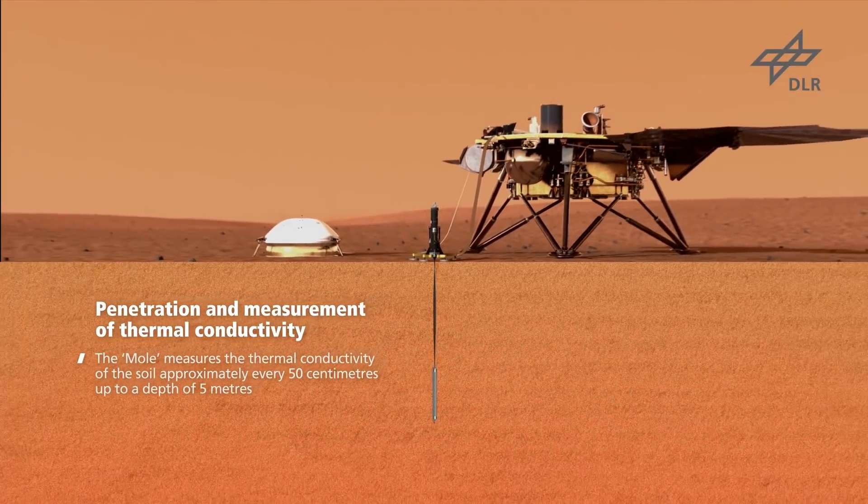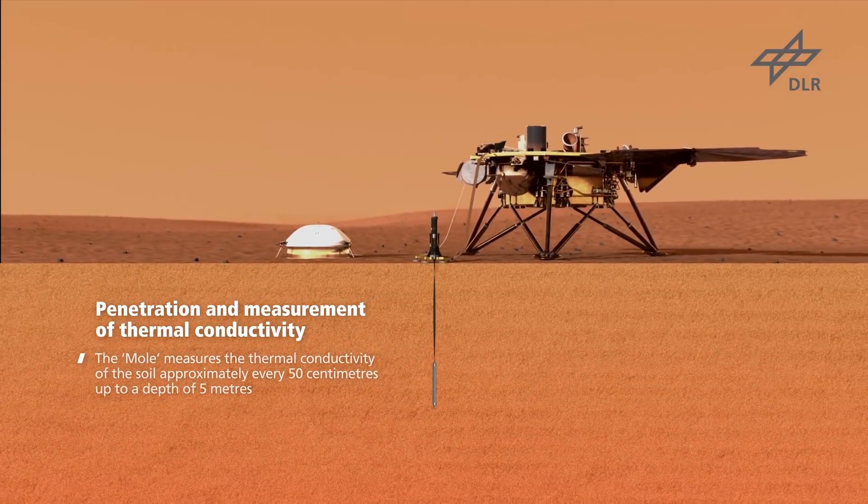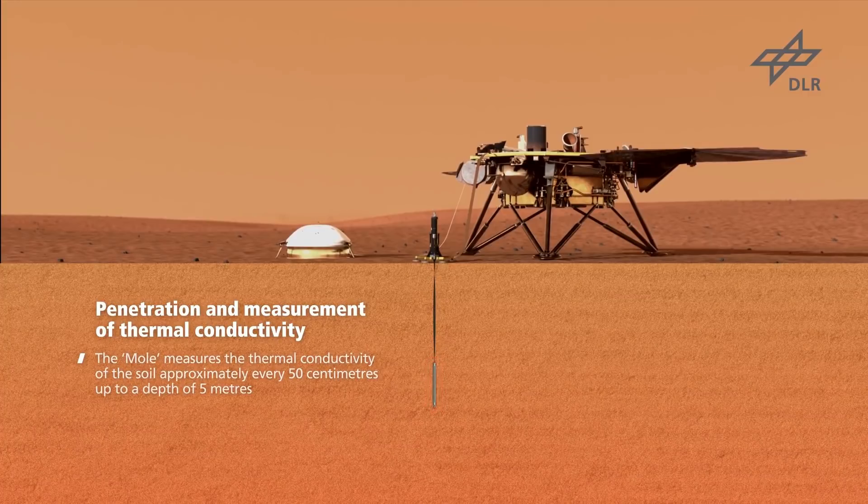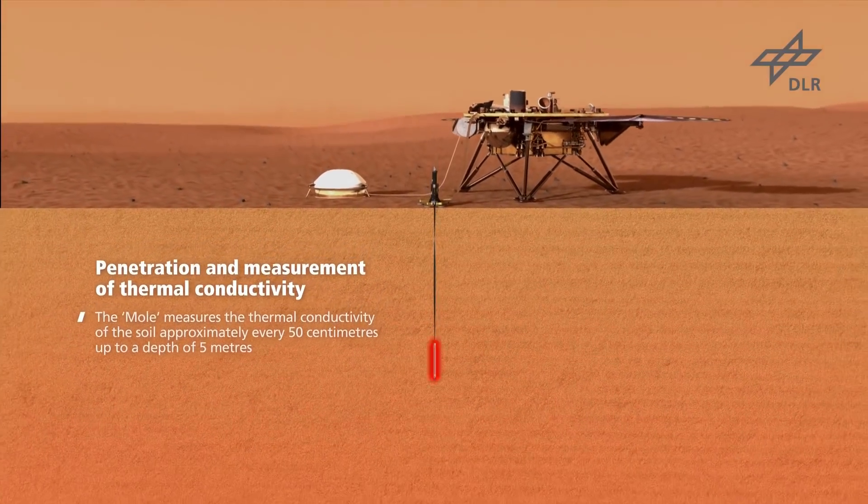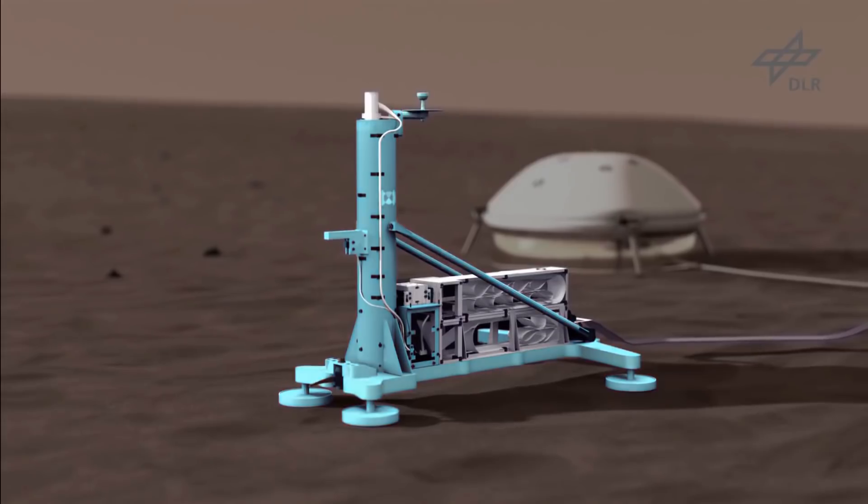Ultimately, being able to measure the temperature at different depths at the exact same time will tell them a lot about how exactly heat is flowing out of Mars. The plan is to be able to actually take these measurements every 15 minutes for a few months. So that's a lot of data points that they'll be able to look at.